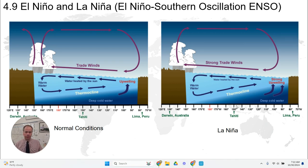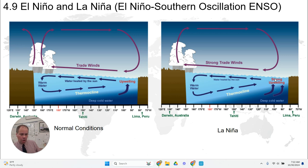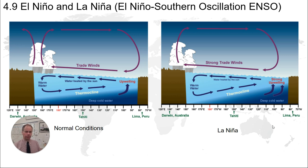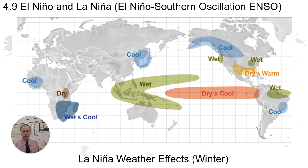Here is a diagram showing a La Niña situation alongside normal conditions. In a La Niña, stronger trade winds push the convection cell even further to the west. We have even stronger upwelling, and would likely have better fishing due to the upwelling of nutrients along the coast of South America. A map also shows what happens in winter during La Niña effects, which is different from what happens in an El Niño event.